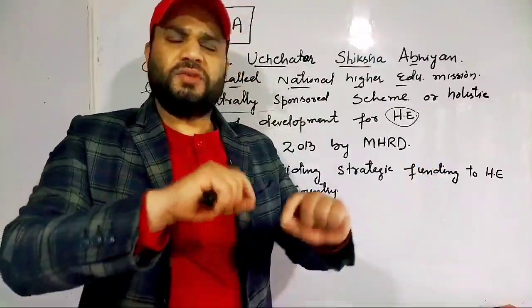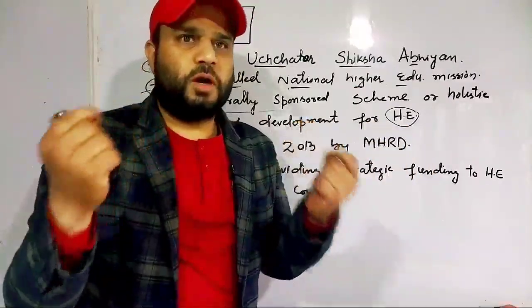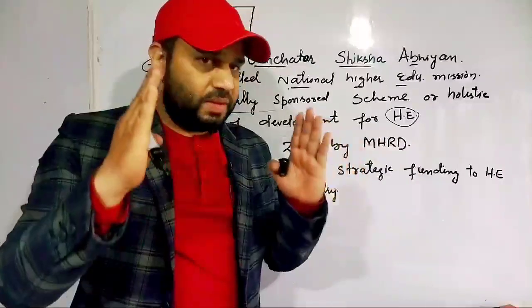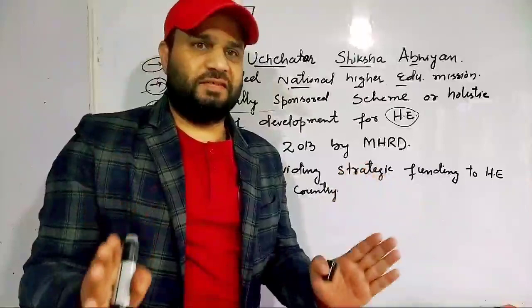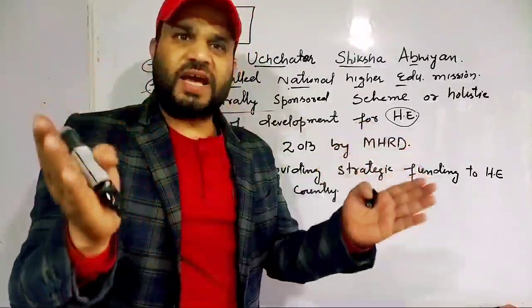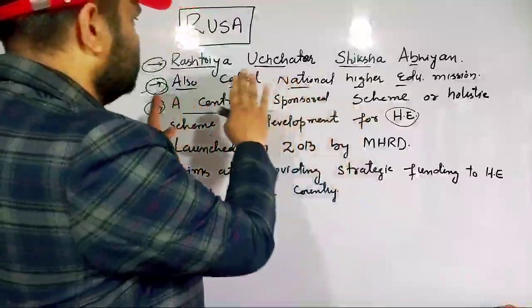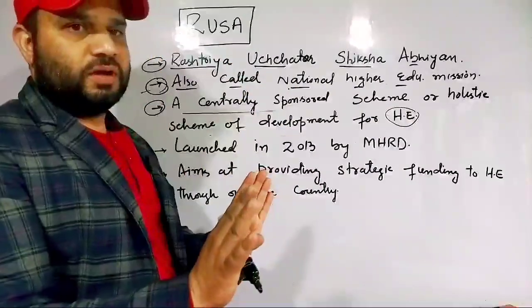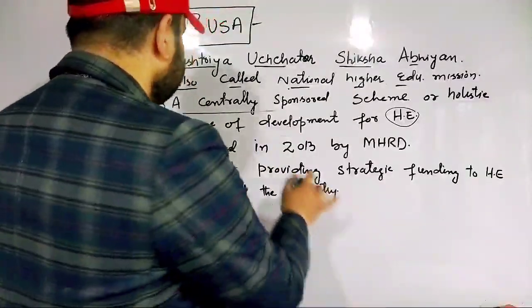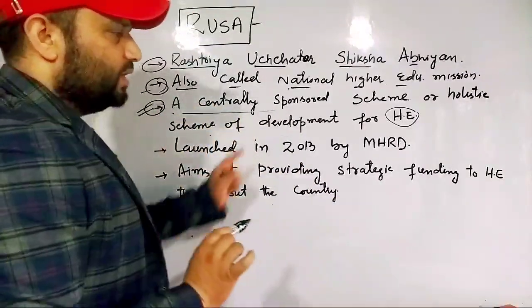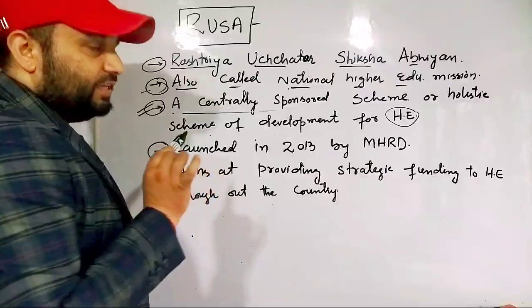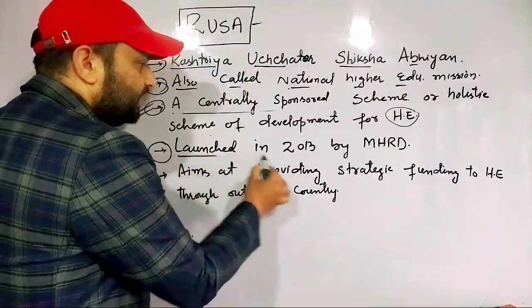It is a holistic scheme of development for higher education. Before RUSA, there were many problems in higher education — regarding finance, quality control, and many other difficulties. To address these problems, the central government launched a scheme targeting higher education — whether it is enrolment ratio, infrastructure, or funding. This scheme was prepared by the central government, which we call RUSA. It was launched in 2013.